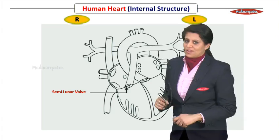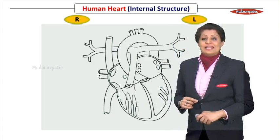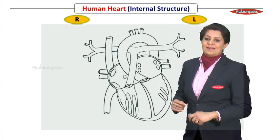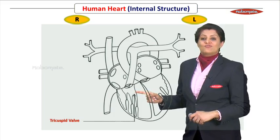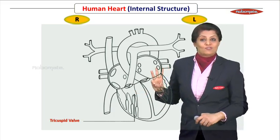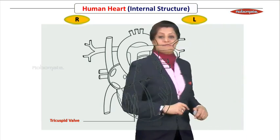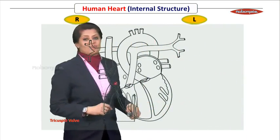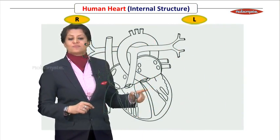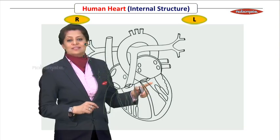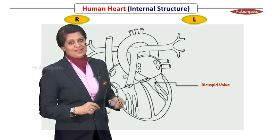Next, draw the important valve present between the right atrium and the right ventricle. This valve is known as the tricuspid valve because it has three flaps. On the other side, in between the left atrium and the left ventricle, the valve present is the bicuspid valve because there are two flaps present.